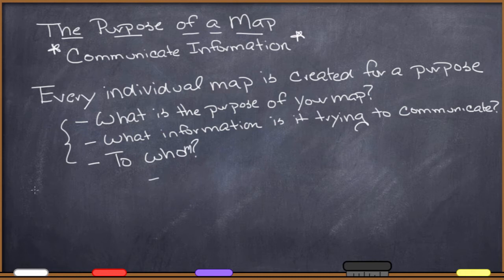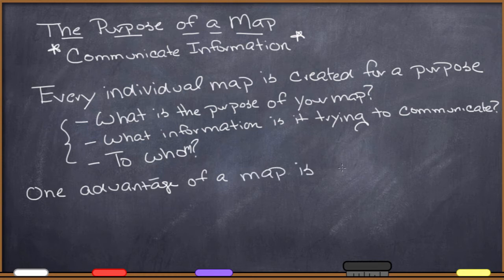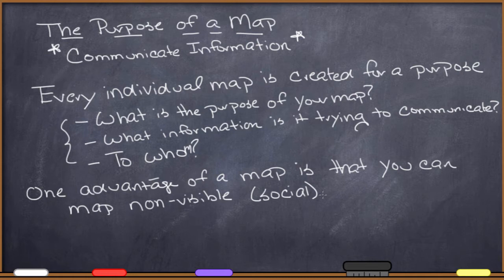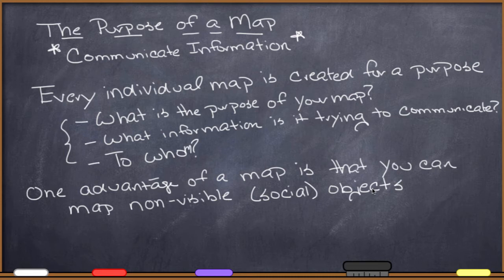One advantage of a map is that you can map non-physical or non-visible objects — social features as well. We can map a lot of social, non-physical objects, whether that's something like the boundary line between Urbana and Champaign, a political boundary, or whether it is something like the distribution of religion, population density, or where languages are spoken in the world. All of those are things you can't photograph because they're not something you can see, but you can certainly still map them.